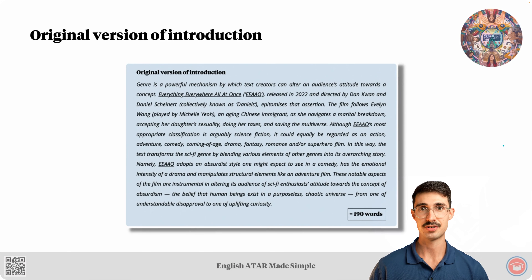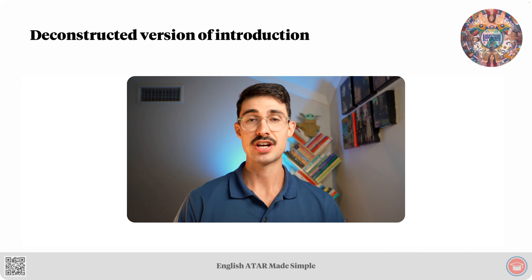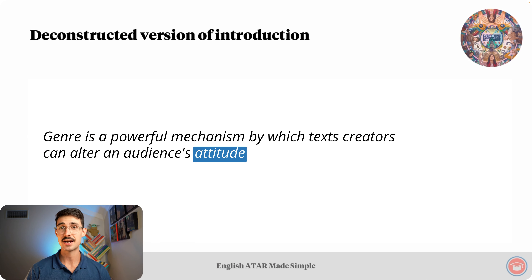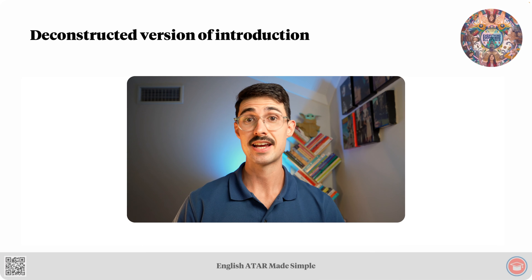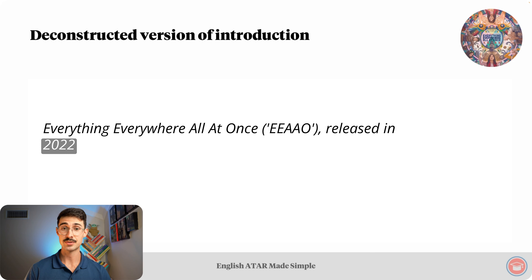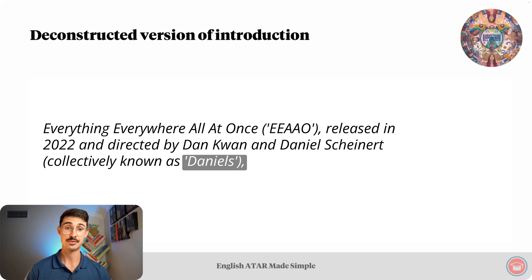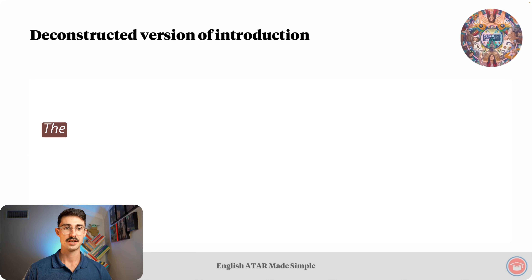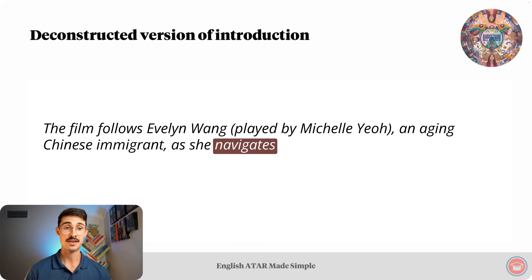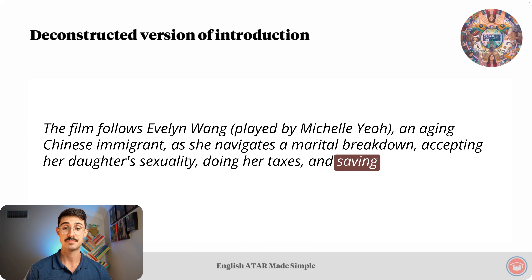Here's the original version of the introduction, and here is the deconstructed version. Starting with the general statement: genre is a powerful mechanism by which text creators can alter an audience's attitude towards a concept. Here's the transition to text element: Everything Everywhere All At Once, EAAO, released in 2022 and directed by Dan Kwan and Daniel Scheinert, collectively known as Daniels, epitomizes that assertion. Plot synopsis: the film follows Evelyn Wang, played by Michelle Yeoh, an aging Chinese immigrant, as she navigates a marital breakdown, accepting her daughter's sexuality, doing her taxes, and saving the multiverse.